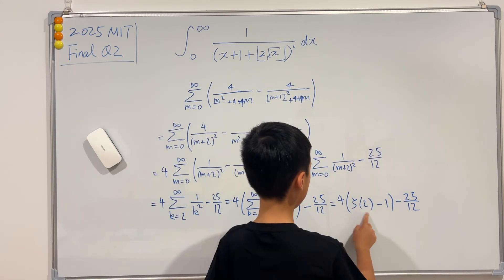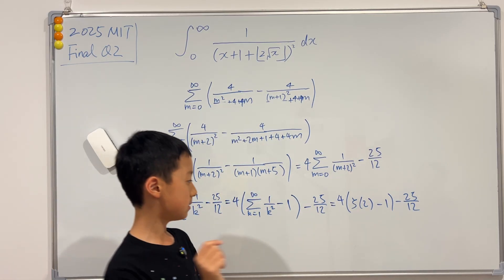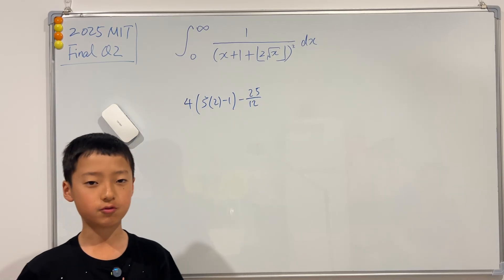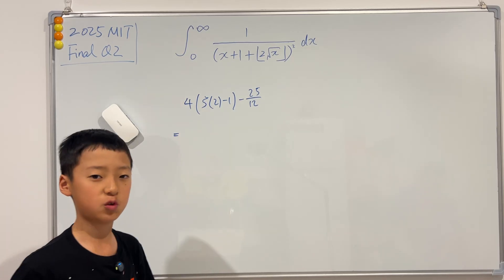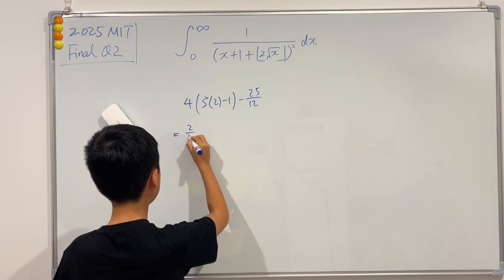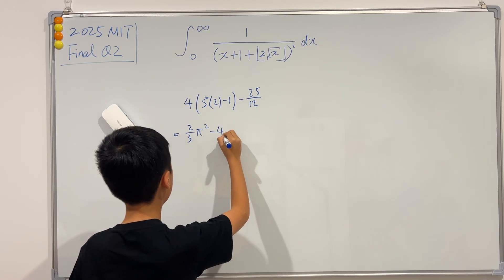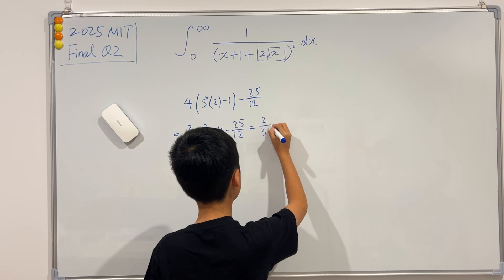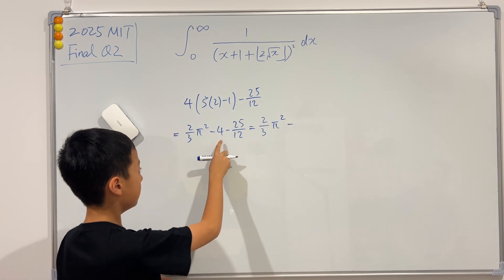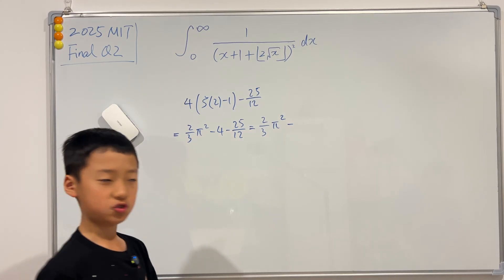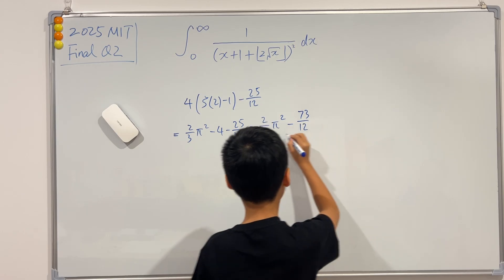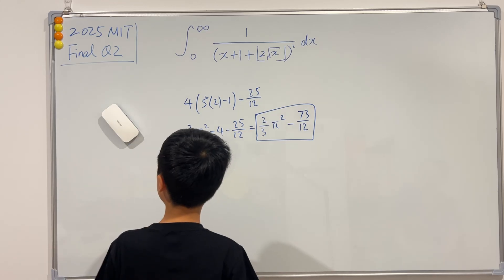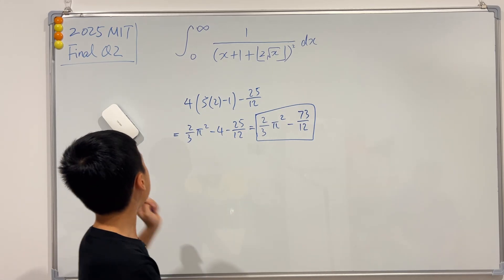ζ(2) is π²/6, so this becomes 4 × (π²/6) = 2π²/3, then minus 4, minus 25/12. Combining the constants: 4 + 25/12 = 73/12. So the final answer is 2π²/3 − 73/12. This is the final answer of the 2025 MIT integration B final, question 2.